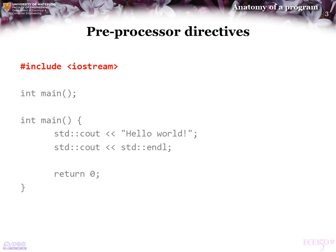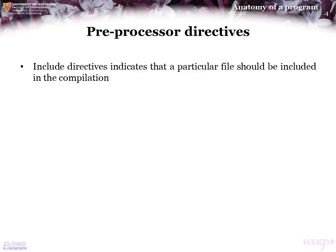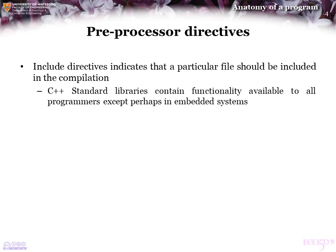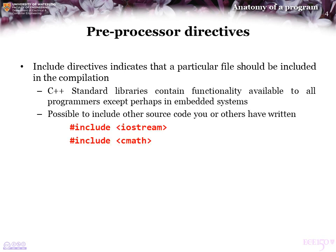To begin, we will start with describing preprocessor directives. You can essentially call this one statement an include directive. An include directive indicates that a particular file should be included in the compilation process. The C++ standard libraries contain functionality available to all programmers, except perhaps those dealing with embedded systems. It is possible to include source code that someone else has written into your programs, and then you can access and use this other person's algorithms and functions. If you want to see a complete list of all possible standard libraries, you can visit c++.com.